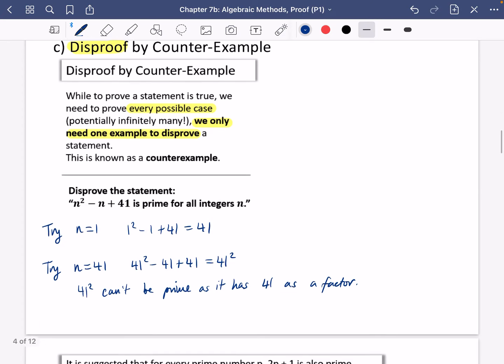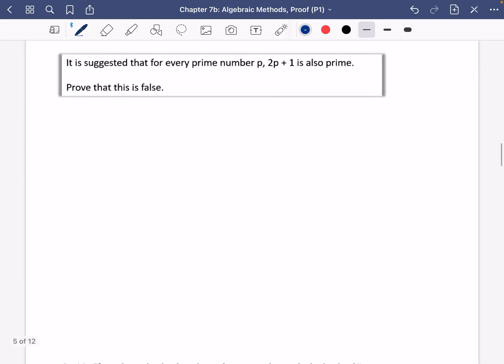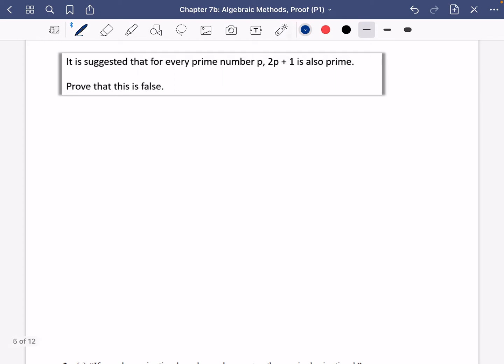The other counterexamples, though, are usually a bit easier to do. So here it says it is suggested that for every prime number p, 2p + 1 is also prime. Prove that this is false. So to show that it is false, all we're going to need is a counterexample.